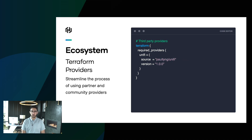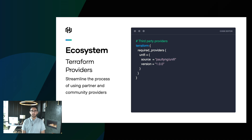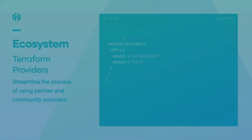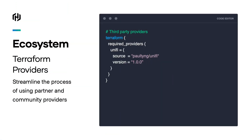Within the public registry, we can now use these different namespaces to have different community members as well as ISV partners publish their own provider. So now you might say, great, I have this provider — I'm going to fork it from the upstream, add some resources, and host it in my own private namespace for my internal organization. And you get all the same benefits of being able to do version pinning and discovery. It's all integrated as part of the terraform init command, so you get the same seamless experience that an official provider gives you as well.